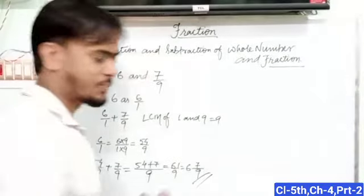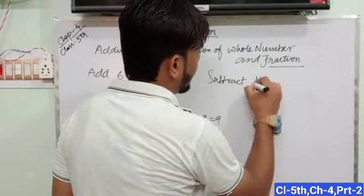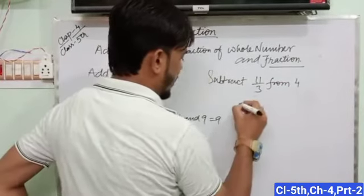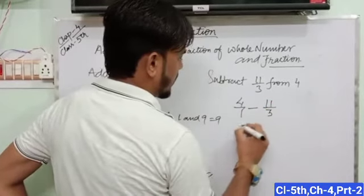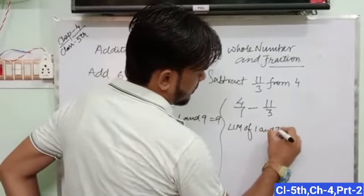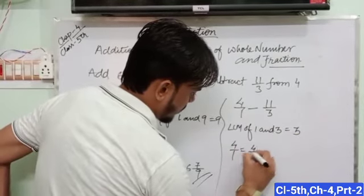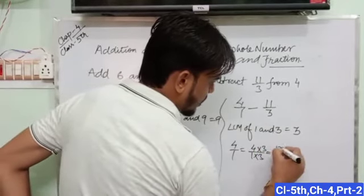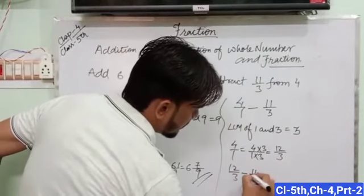And the next question is subtract 11 upon 3 from 4. So we can write 4 as 4 upon 1 minus 11 upon 3. The LCM of 1 and 3 is equal to 3. So change 4 upon 1 to denominator of 3. Multiply by 3, so 4 times 3 is 12 upon 3.